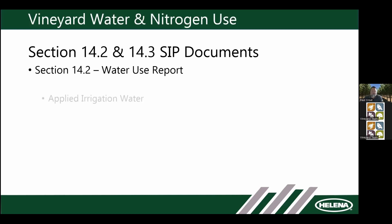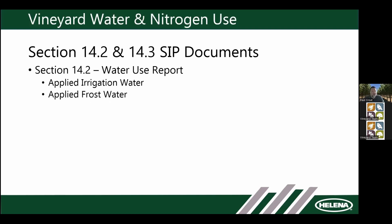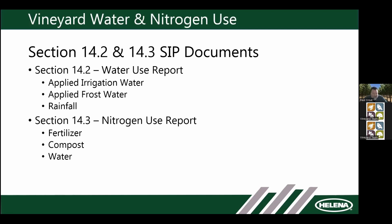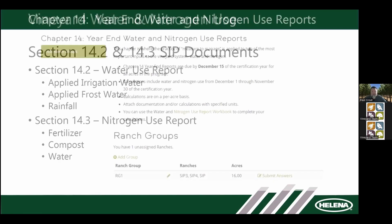We're focusing on sections 14.2 and 14.3. Section 14.2 is your water use report — that covers applied irrigation water, applied frost water if you have frost protection, and documenting rainfall. Section 14.3 is the nitrogen use report, where we calculate and document all nitrogen going into the system: nitrogen from fertilizer, nitrogen from compost, and nitrogen from water. A lot of people forget that well water often contains nitrogen that we need to account for in our calculations.